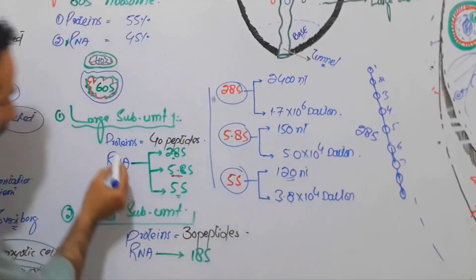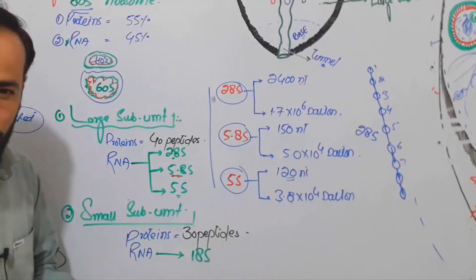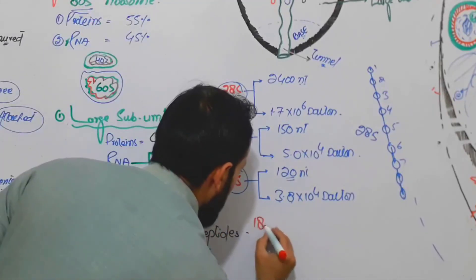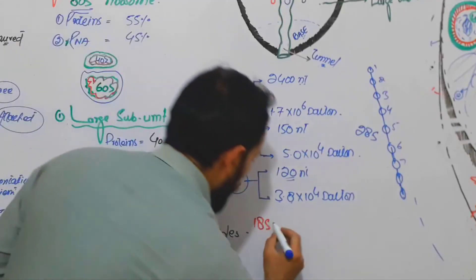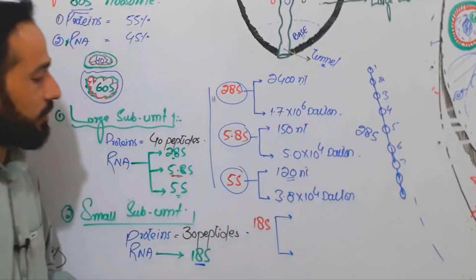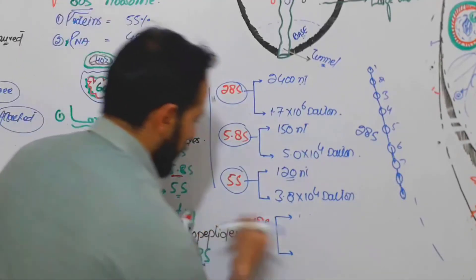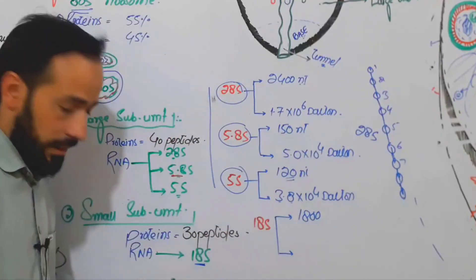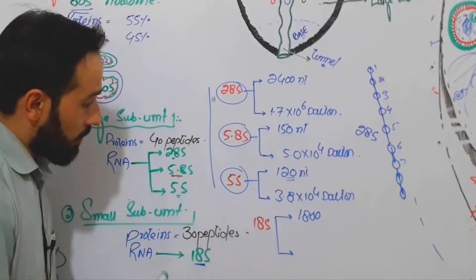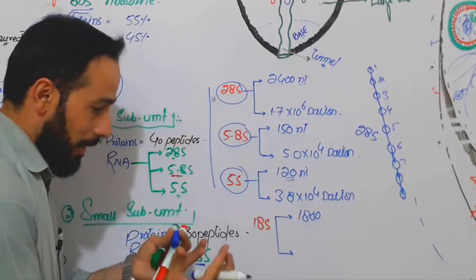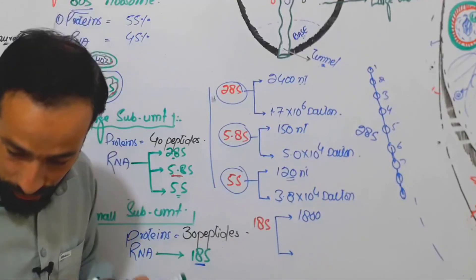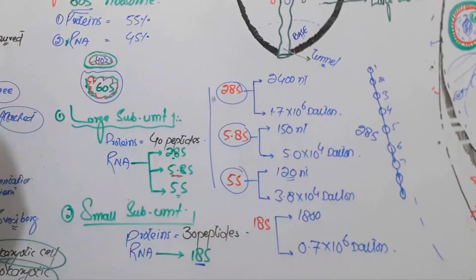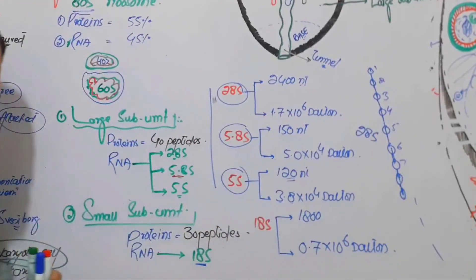These are the three types of RNAs found in the large subunit of the 80S ribosome. Now the last one, the 18S RNA found in the small subunit: it contains about 1800 nucleotides. The molecular weight of those nucleotides is 0.7 × 10⁶ Daltons. This completes the composition of the 80S ribosome.